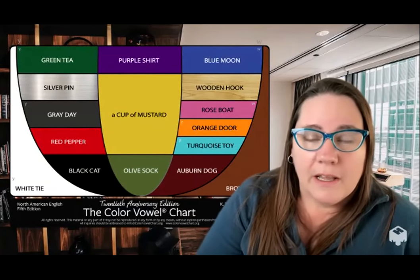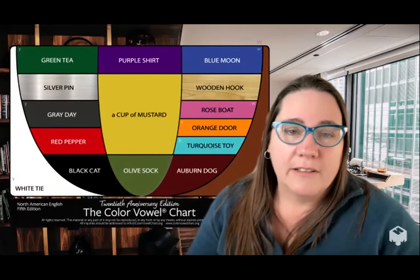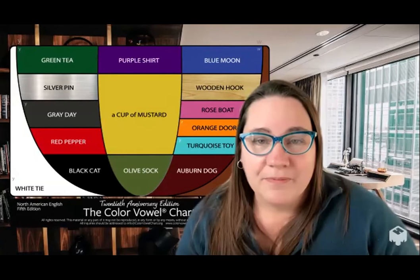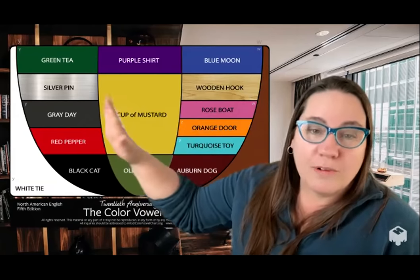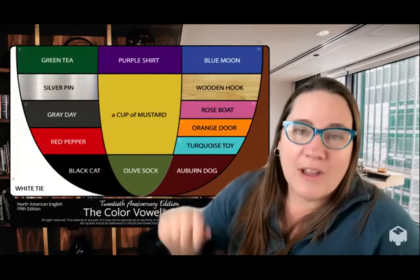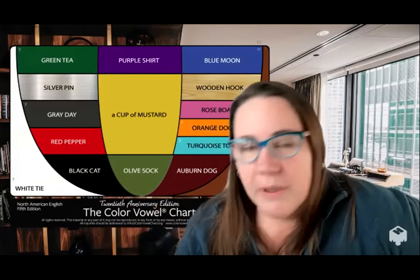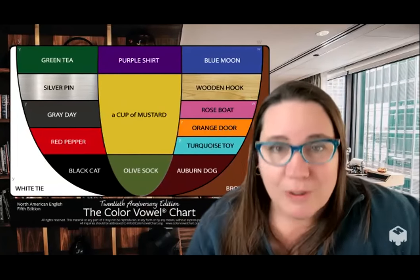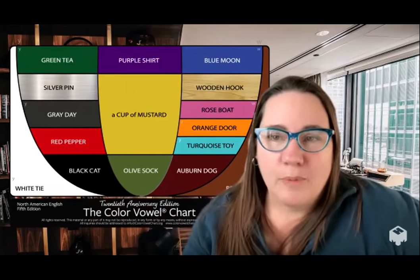Each of these phrases on the chart represents a vowel sound of English, and we're able to describe a word by its color. For example, I'd ask Jackie how she says her last name — Ehlers — and I wondered whether it was Red Pepper Ehlers or Gray Day Ehlers, since those two sounds are very similar. Now we have a name for each of those sounds. This is a brain-based approach to teaching that cuts down on talking about pronunciation and maximizes doing pronunciation, and it brings in a variety of accents.